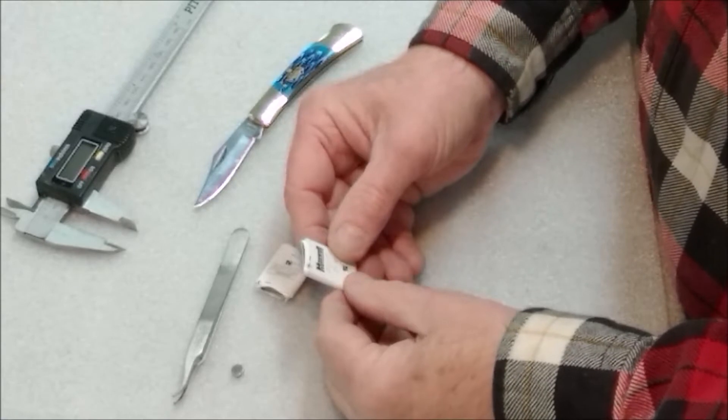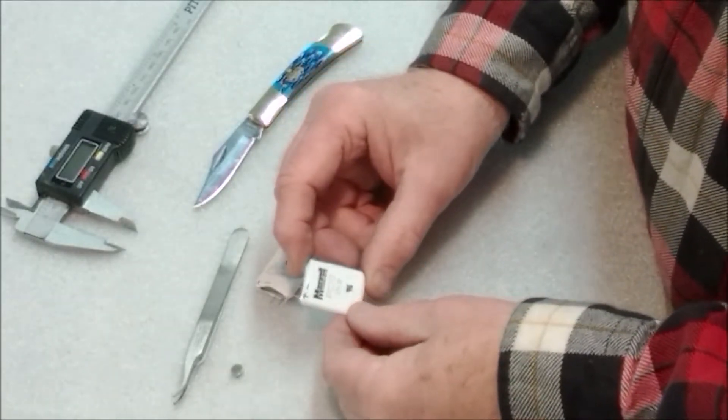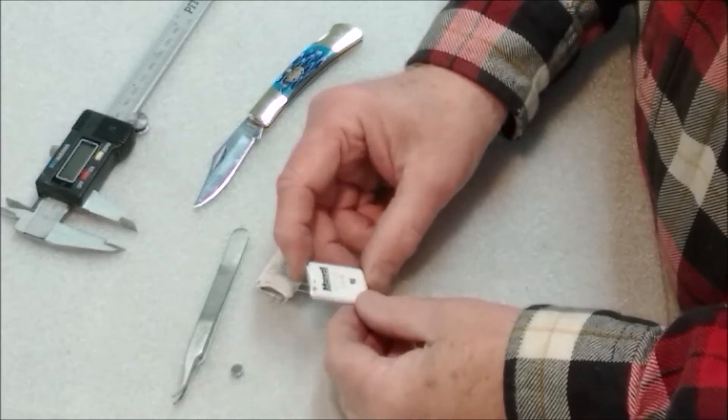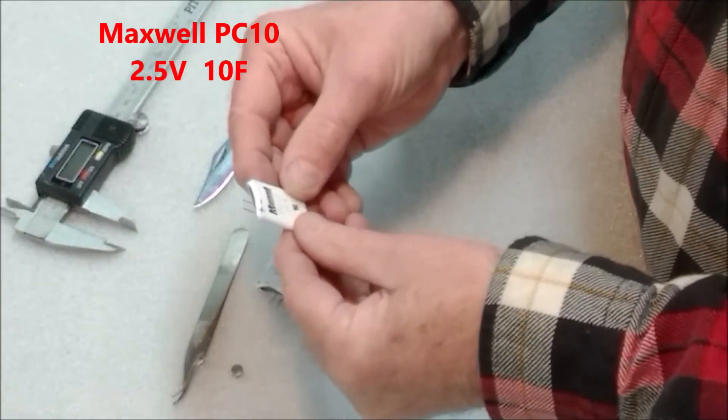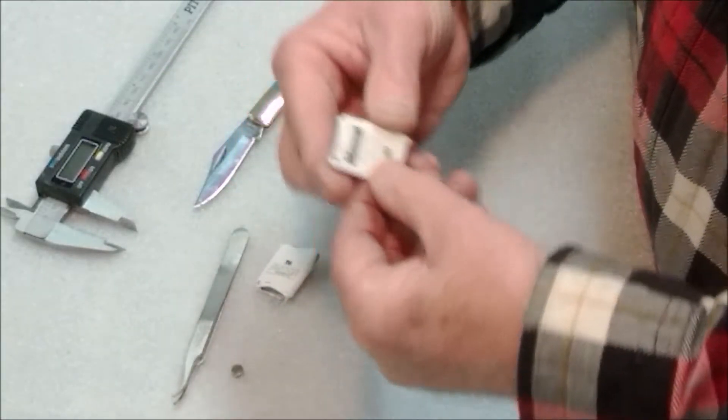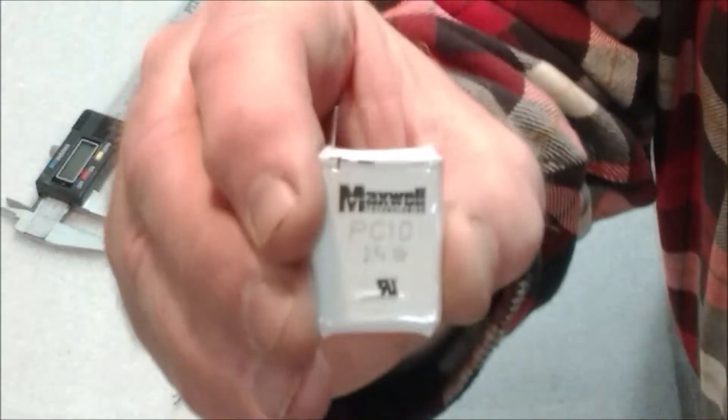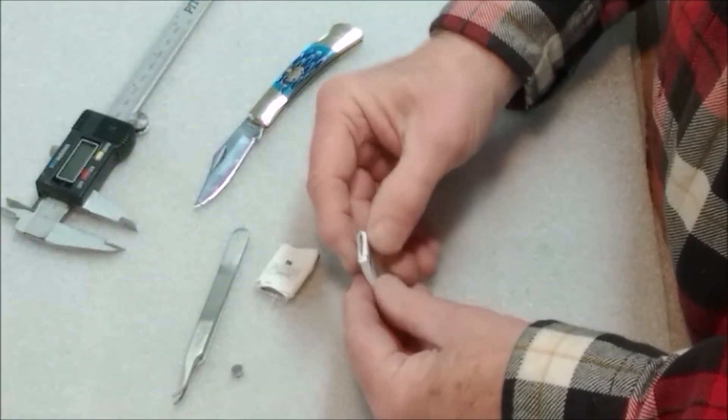Hey, good morning. What we're taking a look at this morning is this Maxwell supercapacitor. This is a commercially available capacitor. This particular one says PC 10, 2.5 volt, 10 farad. And we're going to disassemble this to see what type of construction and materials might be inside a commercial supercap.